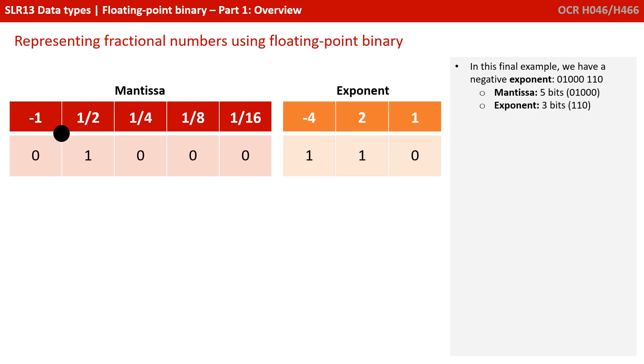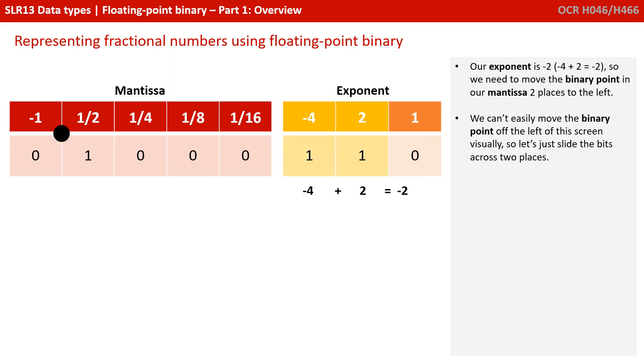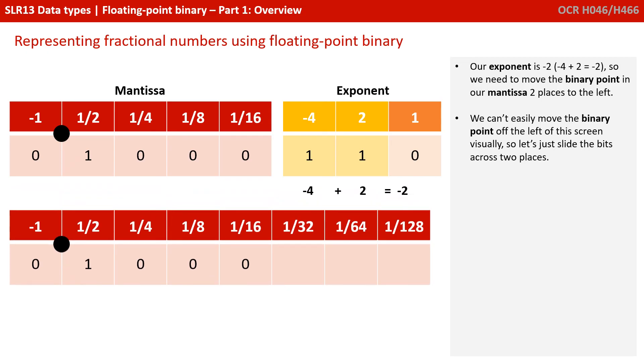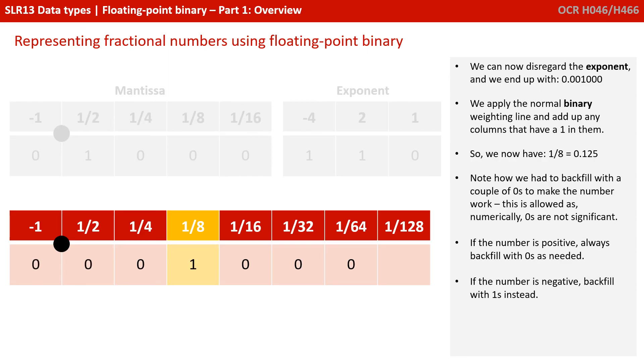OK, in this final example, we're going to use a negative exponent. So again, 8 bits, 5 for the mantissa, 3 for the exponent. The full number, 01001110. So we start by working out the exponent. The exponent is minus 2. Minus 4 plus 2 is minus 2. So we need to move the binary point in our mantissa two places to the left this time, because it's a negative exponent. Now we can't easily move the binary point off the left of this screen visually, so we're just going to slide the bits across two places, which serves the same purpose. We can now disregard the exponent, and we end up with 0.00100. We apply the normal binary weighting line and add up the columns with a 1. All we've got is a 1 in the 8th column, so this number was 0.125.